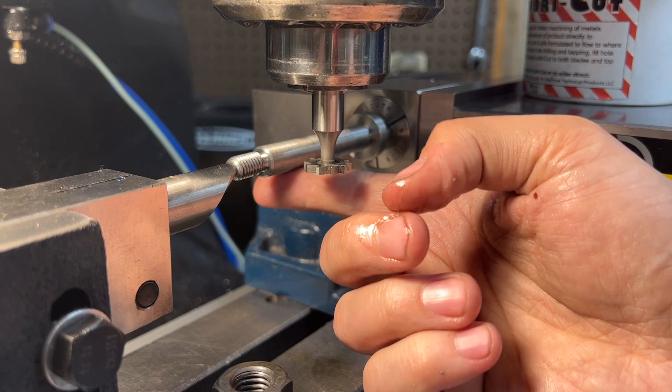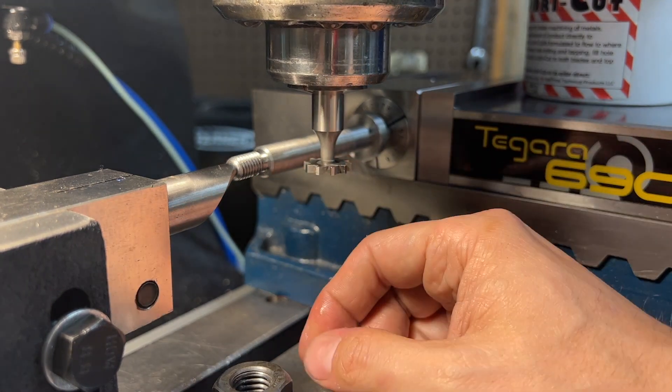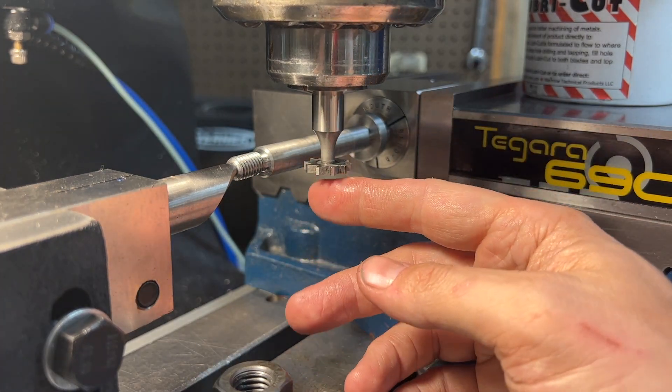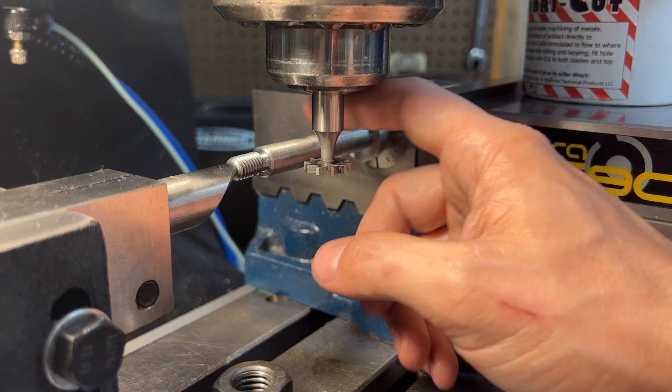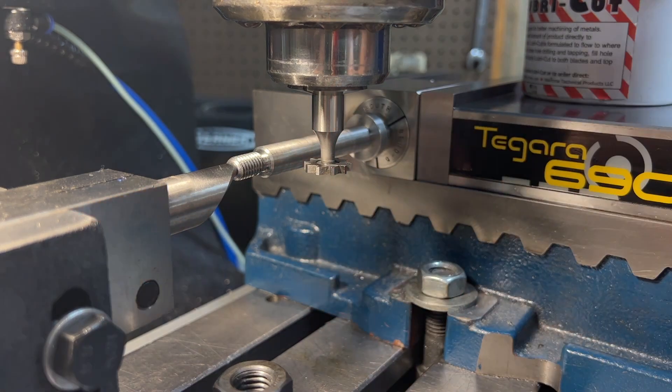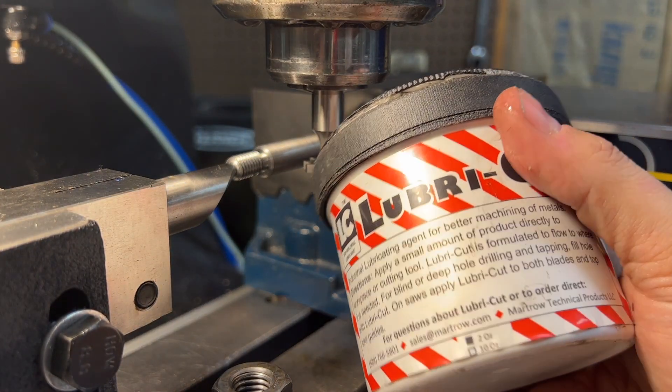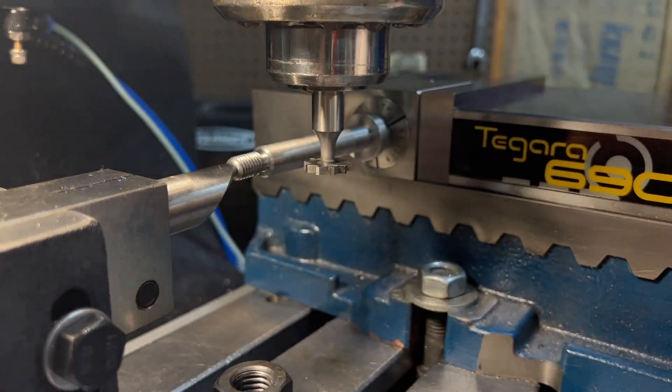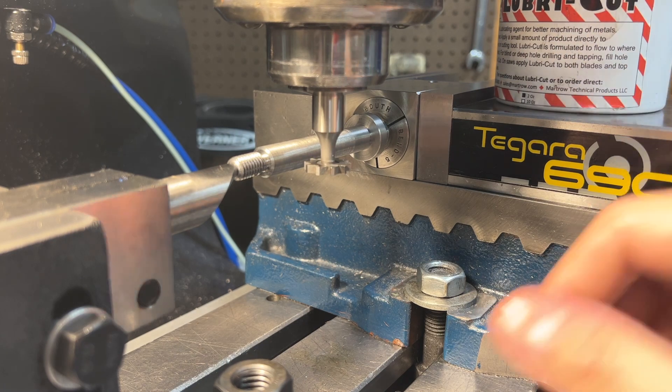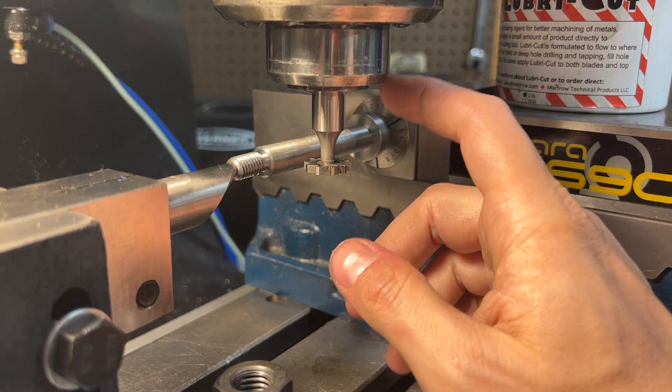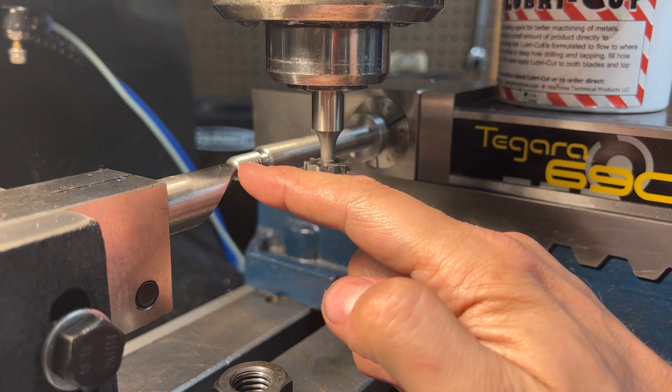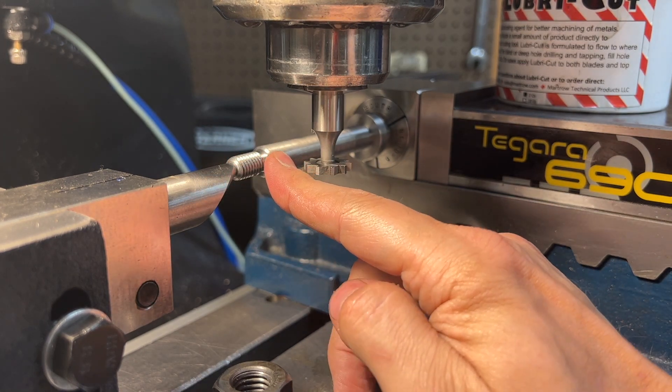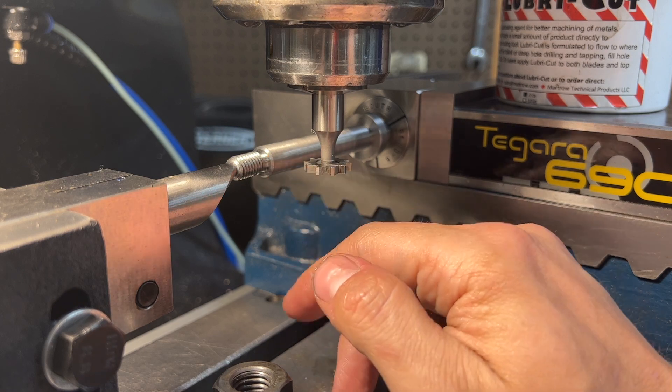We then used our planar gauge to find the bottom of this shaft and then used that to zero the bottom of our cutter and then just moved up the appropriate distance to get to the center. We are going to dunk the cutter in this Lubricut stuff. This is supposed to be a heavy duty cutting fluid so hopefully that will help us out here.